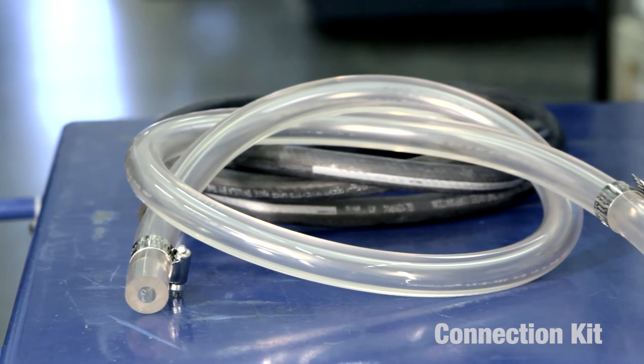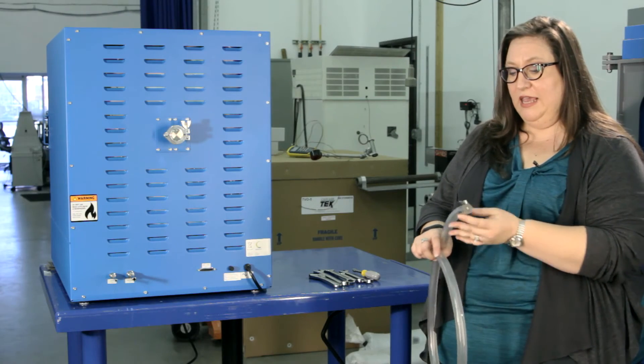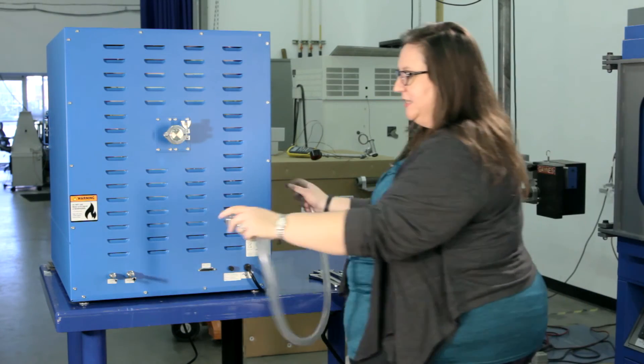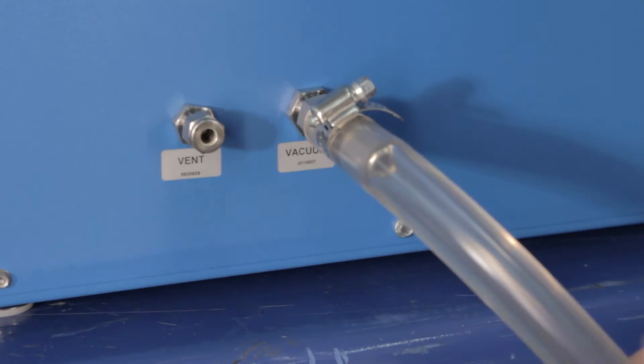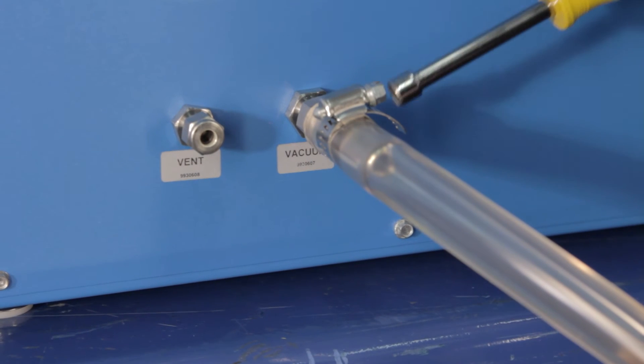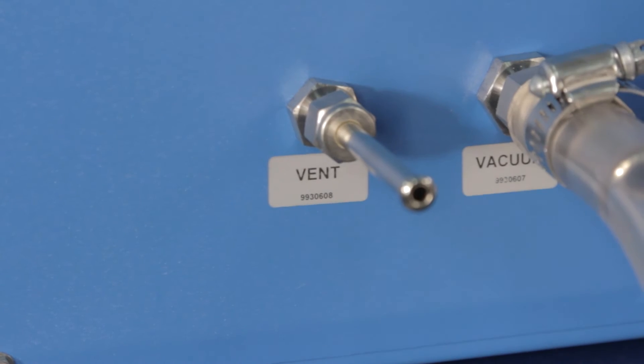In your connection kit, you received vacuum rated tubing with a little hose clamp. Simply slide this over the vacuum stub and use your quarter-inch nut driver to tighten that hose clamp.